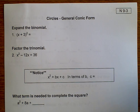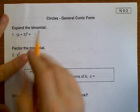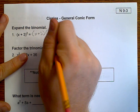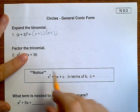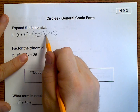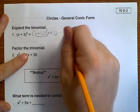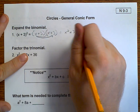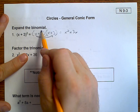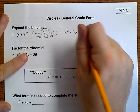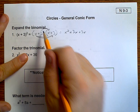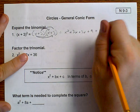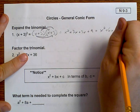But first, let's get some practice. x plus 3 squared — that is x plus 3 times x plus 3, which if we FOIL: first is x squared, outer plus 3x, inner plus 3x, last plus 9, which gives us x squared plus 6x plus 9.